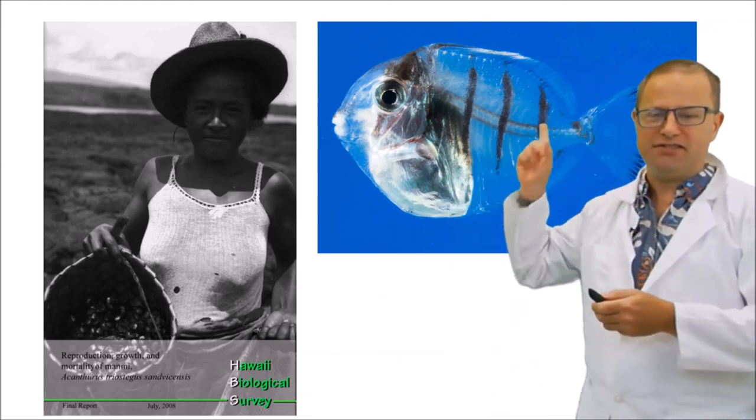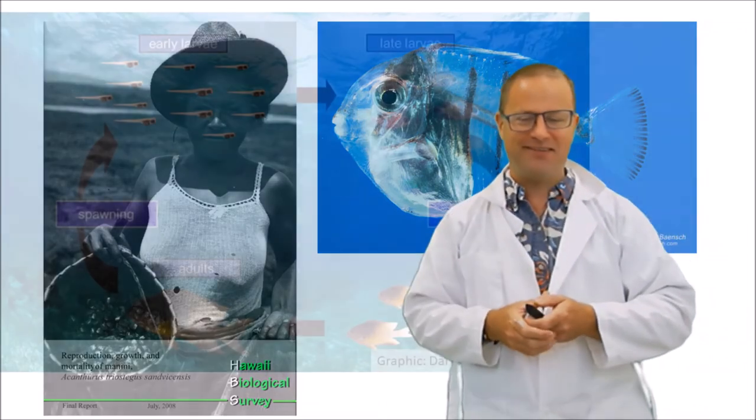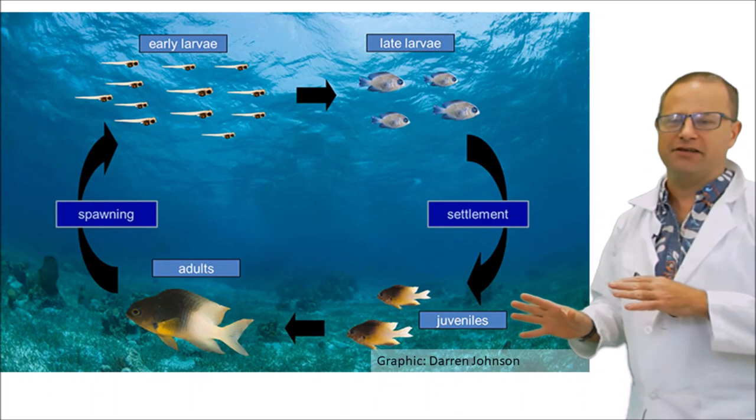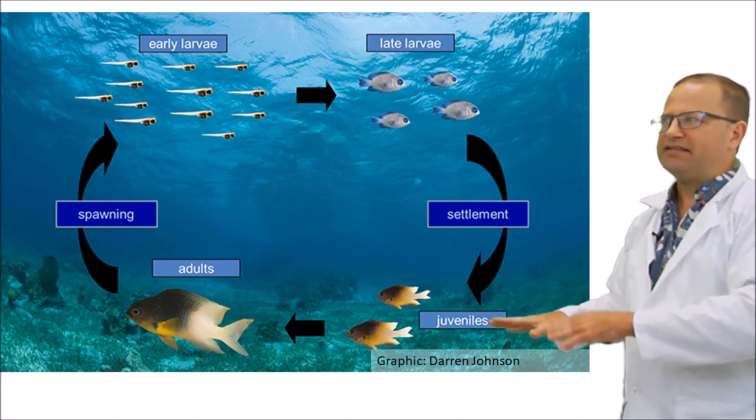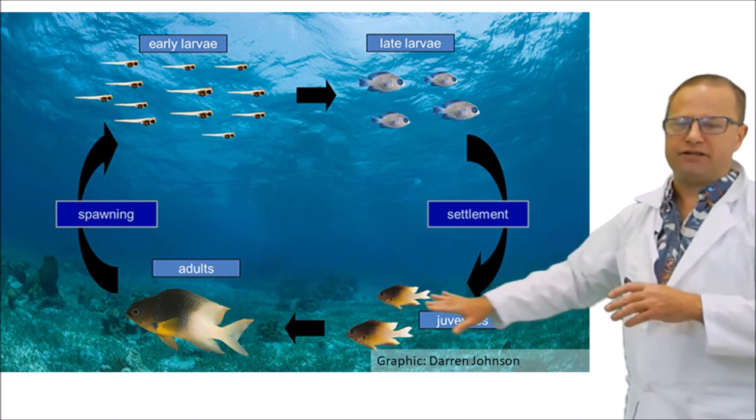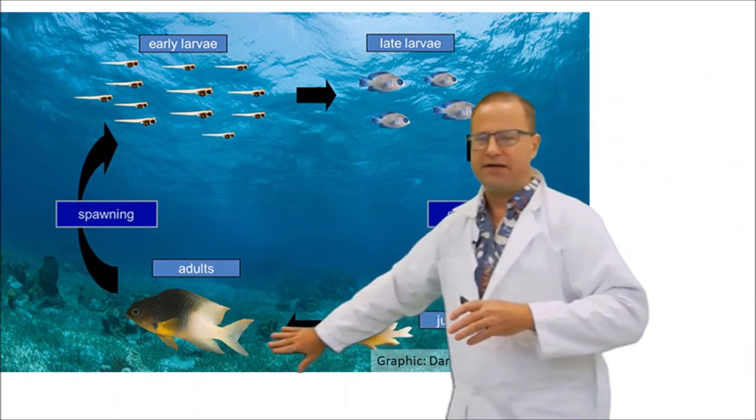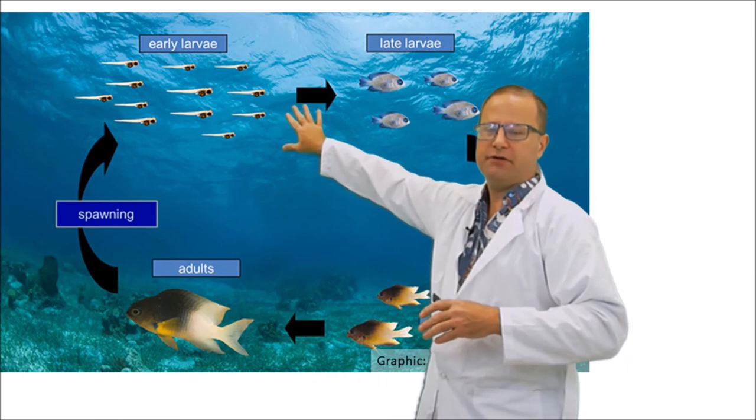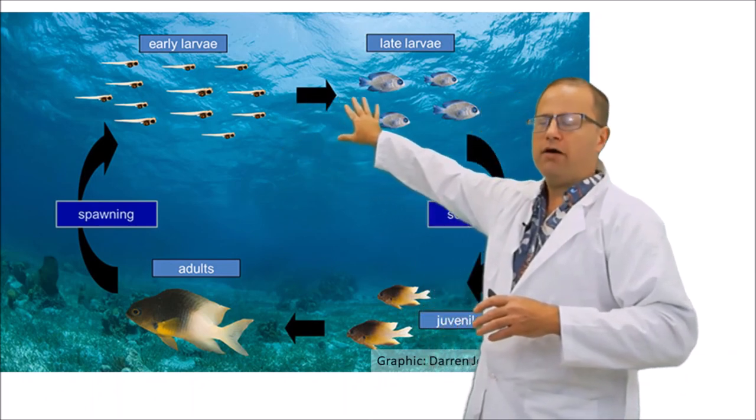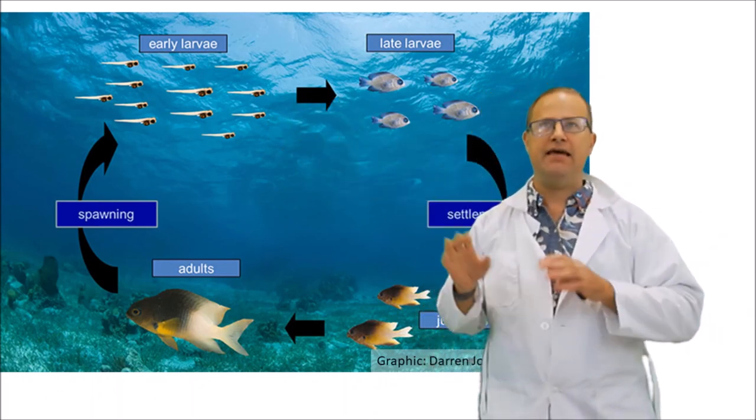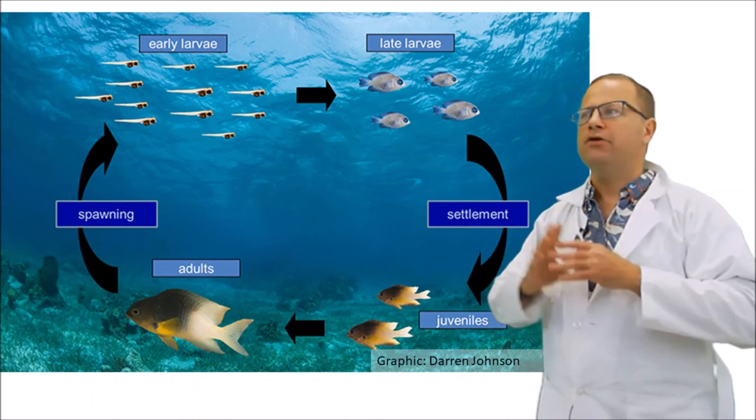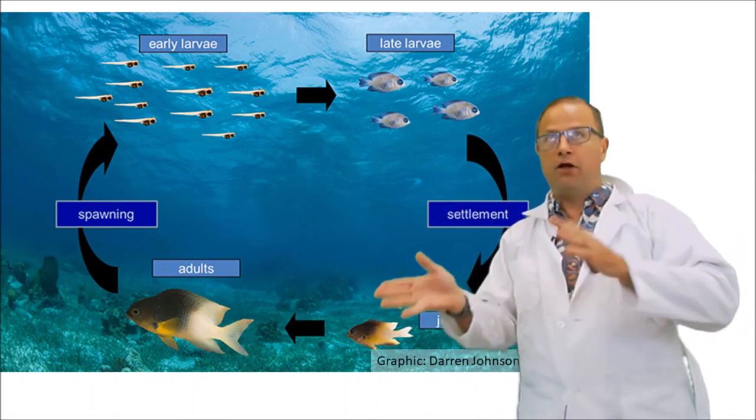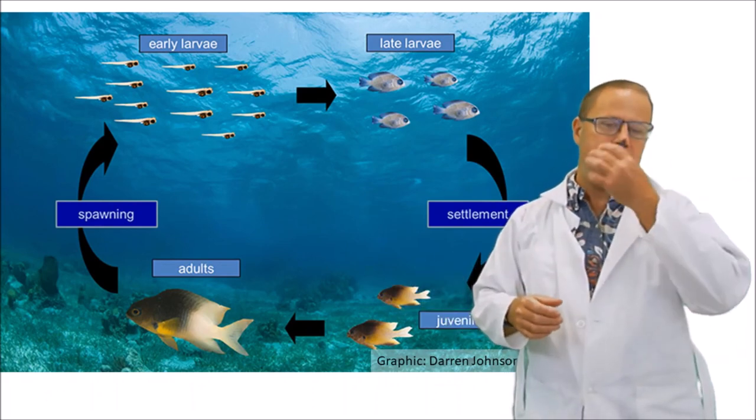All right, coral reef fishes have a little bit different life cycle here. Instead of laying their eggs in the nest, most coral reef fishes actually have eggs that are pelagic. They're spawned up in the water column, and those eggs will develop there into larvae. And the larvae hang out in the water for about 30 days. And initially the yolk sac larvae, what we would call the alevins, can't really swim around, so they're just kind of going where the water goes.